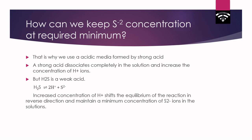That is why we use acid to keep the sulfide ion concentration at the required minimum. We generally use a strong acid because it is a strong electrolyte that dissociates completely, increasing the H+ concentration in solution. Since H2S is a weak acid, the increased H+ concentration shifts the equilibrium of H2S dissociation in the reverse direction, maintaining a minimum concentration of sulfide ions in solution. This is why we must use acidic media.